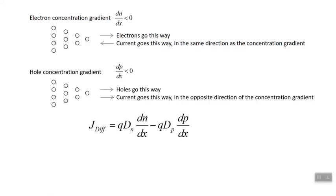Let's put these two expressions for diffusion current density together: the first term is for electrons, the second for holes. There was a minus sign in my expression, and replacing the charge with plus or minus little q gets rid of the minus sign for electrons. Let's check that the signs make sense for holes: the concentration gradient dp/dx is negative because going to the right there are fewer holes, and q is a positive number, but the current goes to the right. The negative signs cancel — dp/dx is negative and it cancels with the minus sign in the expression — so the signs work out correctly.